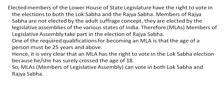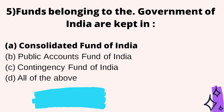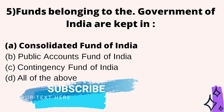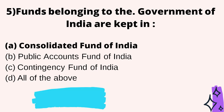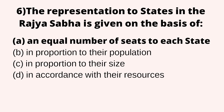Funds belonging to the Government of India are kept in: option A — Consolidated Fund of India; option B — Public Accounts Fund of India; option C — Contingency Fund of India; option D — all of the above. The right answer is option A — Consolidated Fund of India.